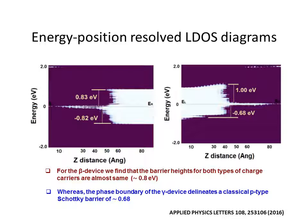Looking at the energy position resolved local density of states diagrams, we find there are sharp changes in local density of states which take place exactly around the phase boundaries and abruptly isolates the metallic phase from the semiconducting phase. We also find the Schottky barrier height is different for these two phase boundaries. For beta device, we find that the barrier heights for both types of charge carriers are almost same, which is around 0.8 eV, whereas the phase boundary of the gamma device delineates a classical p-type Schottky barrier of 0.68 eV.